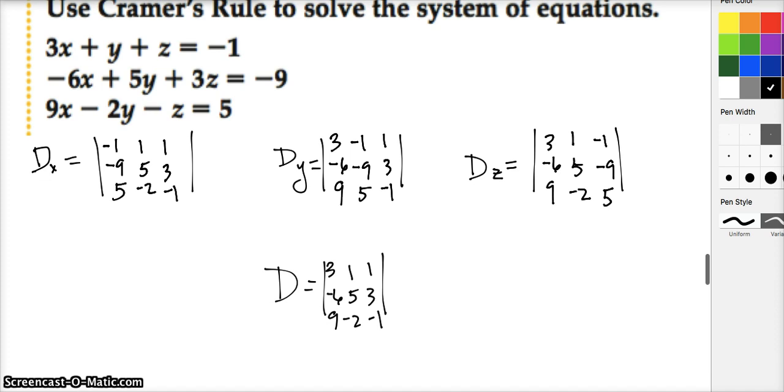The X coefficients would be 3, negative 6, and 9. Y coefficients are 1, 5, and negative 2. Then we skip the Z coefficients and get negative 1, negative 9, and 5. This is a lot of work. I want you to be able to do this, however, I also want you to be able to use a calculator to do it as well.